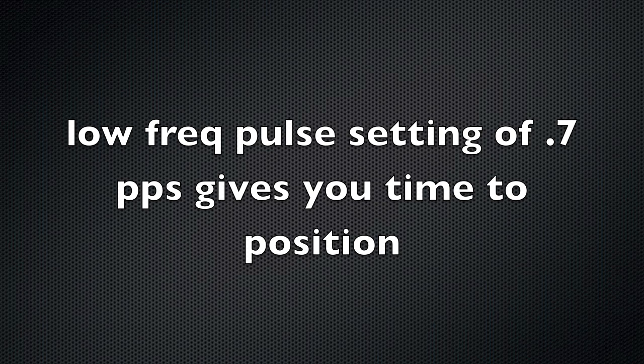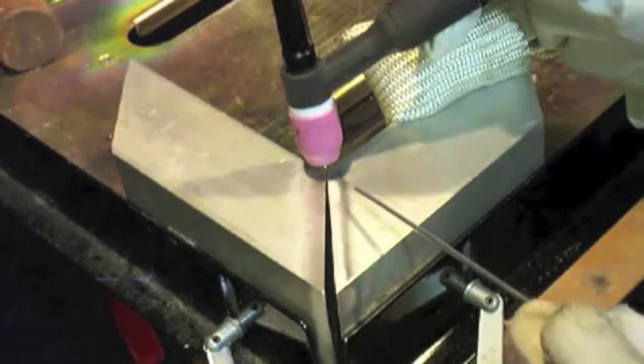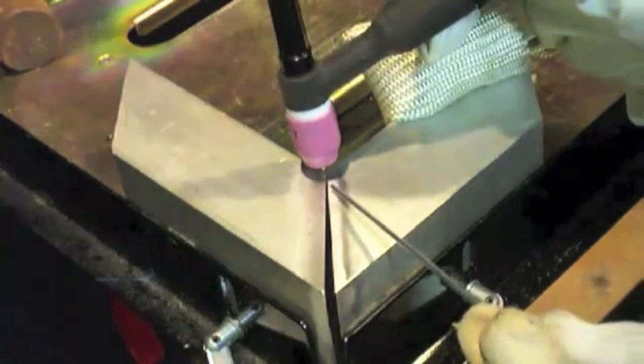Another tip is a low frequency pulse setting of like less than one pulse per second like 0.7 will give you time to get in position a little bit better. You don't feel locked into one pulse per second, you can go even lower.